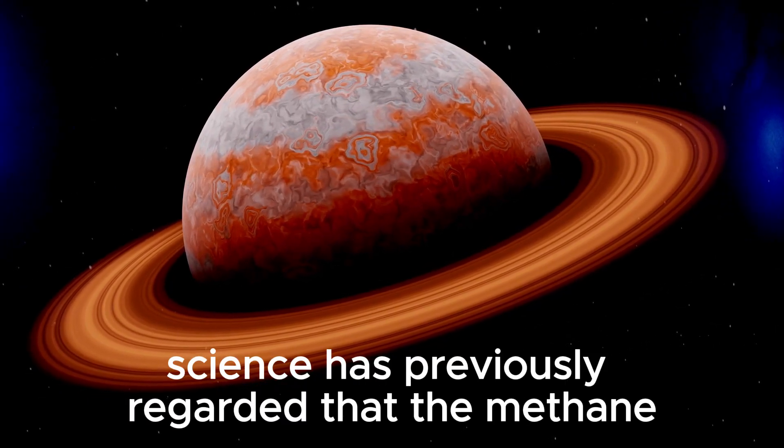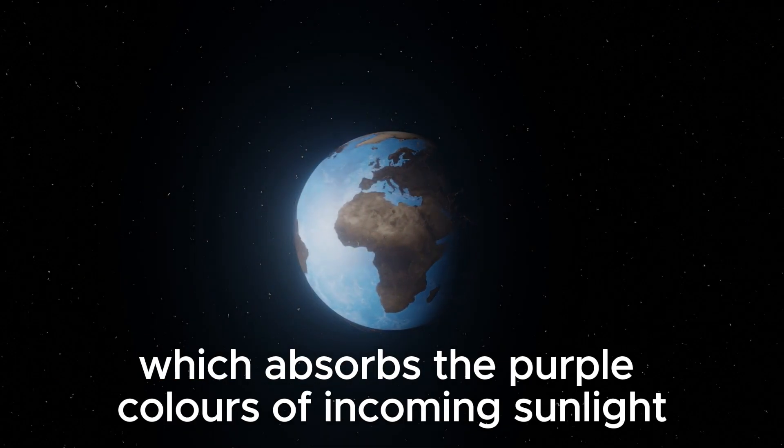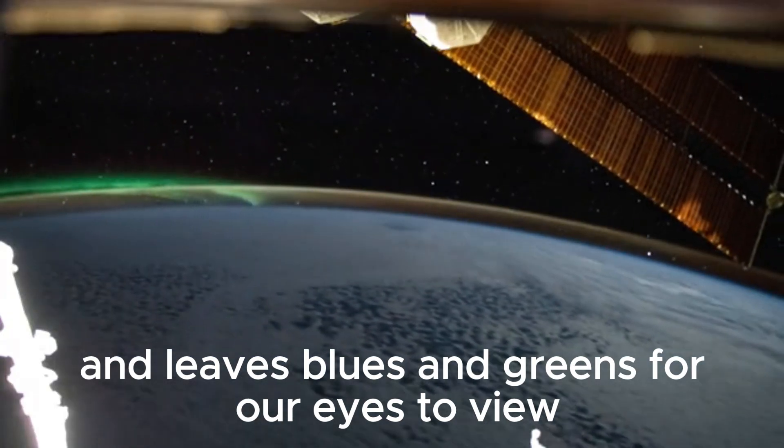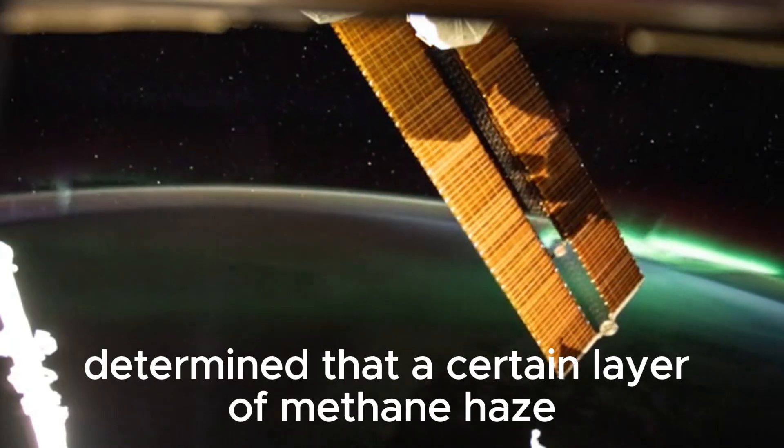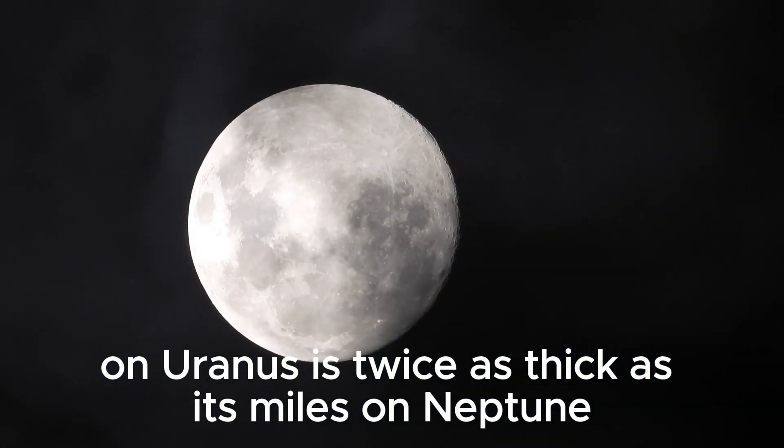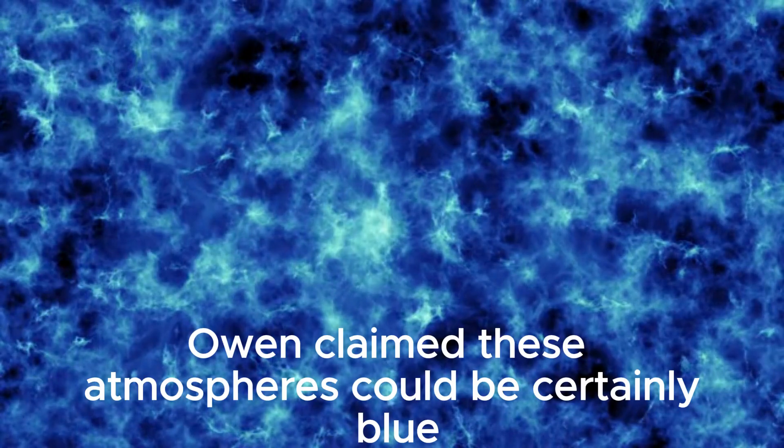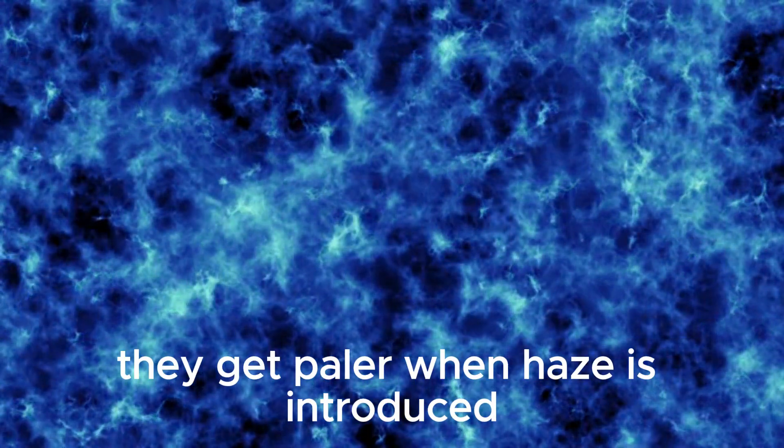Science has previously regarded that the methane in Neptune's and Uranus's atmospheres, which absorbs the purple colors of incoming sunlight and leaves blues and greens for our eyes to view, gives them their generally bluish appearance. Anand and his buddies determined that a certain layer of methane haze on Uranus is twice as thick as its miles on Neptune. Even though if there were no haze, Owen claimed these atmospheres could be certainly blue. They get paler when haze is introduced.